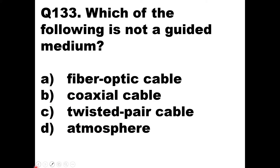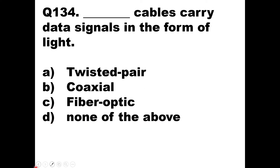Question 133: Which of the following is not a guided medium? Option A is fiber optic cable — physical, guided. Option B is coaxial cable — physical, guided. Option C is twisted pair cable — physical, guided. Option D is open space/atmosphere, used for wireless communication — not guided media. So option D is the correct answer.